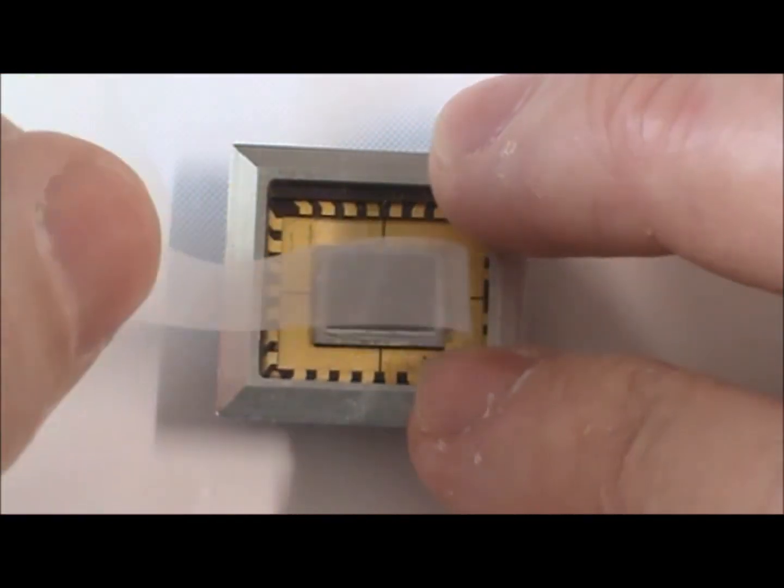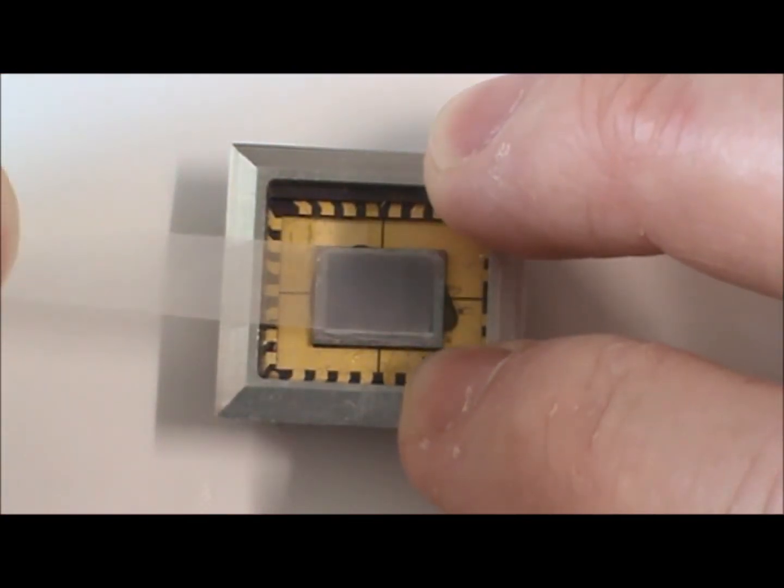When you're ready to expose the sensor grasp the mesh and pull it back on itself to peel.